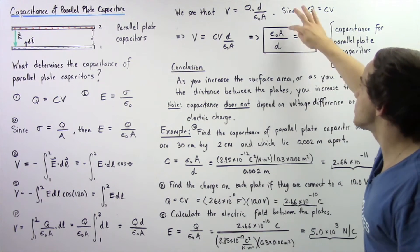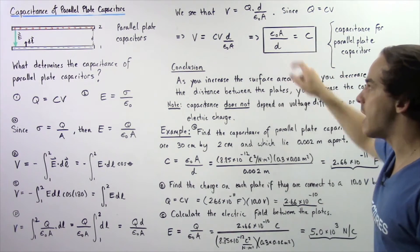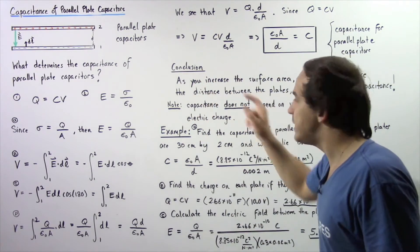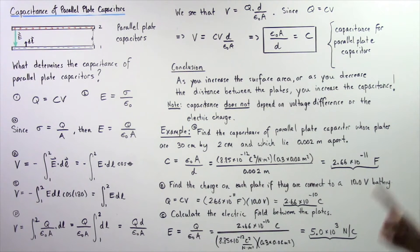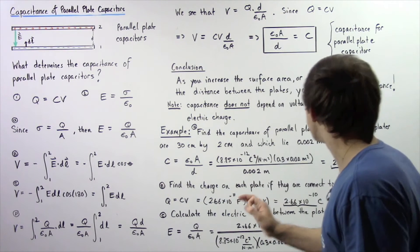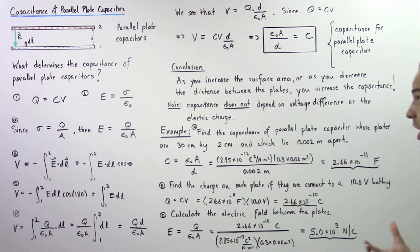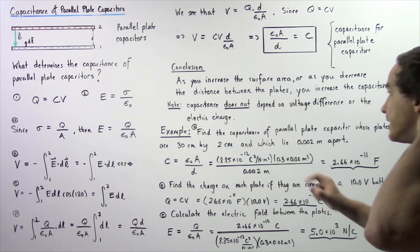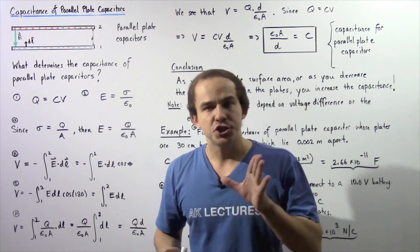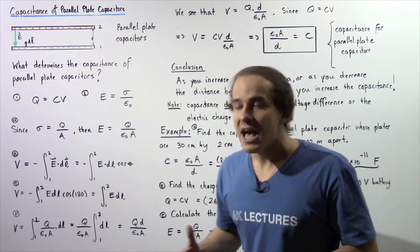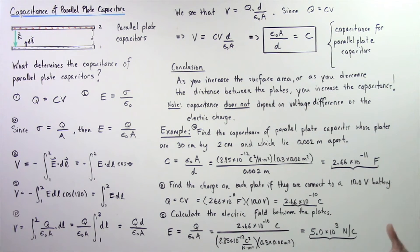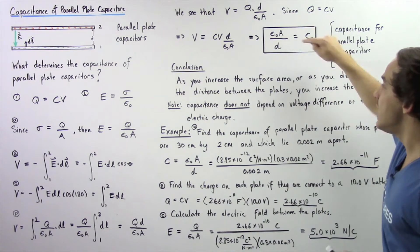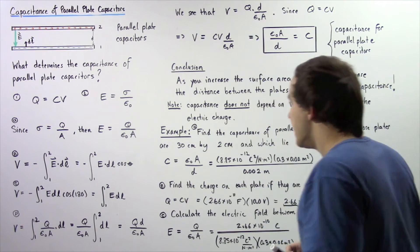Notice that capacitance depends on two things: the surface area A and the distance d separating the plates. As you increase the surface area or decrease the distance between the plates, you increase the capacitance — meaning the capacitor can store more charge. Importantly, capacitance does not depend on the voltage difference between the plates, nor on the quantity of charge stored. C depends only on A and d.